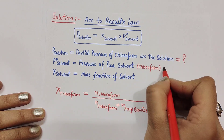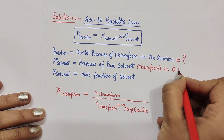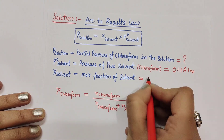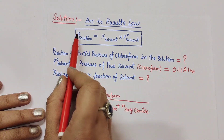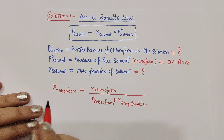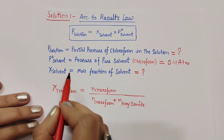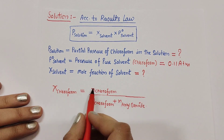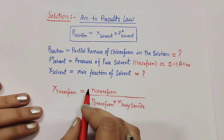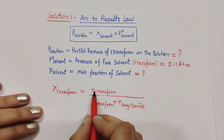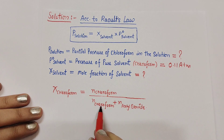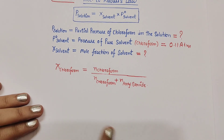P°_solvent is the pressure of pure chloroform, which is given as 0.118 atm. X is the mole fraction of the solvent, which we also need to calculate. In this question, chloroform is the solvent and acetyl bromide is the solute. The mole fraction of chloroform equals the number of moles of chloroform divided by the total moles of both chloroform and acetyl bromide.